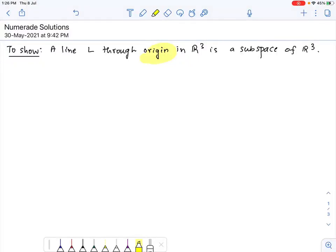In this problem we need to show that a line L passing through the origin in R cube is a subspace of R cube.